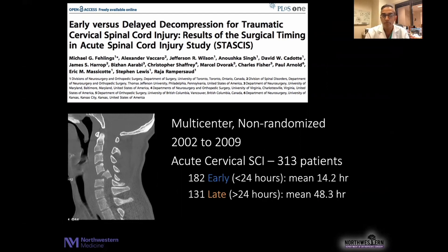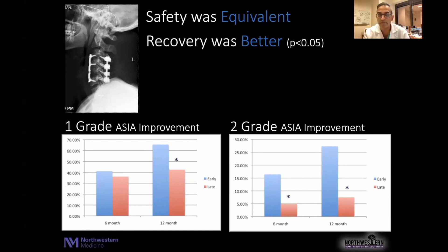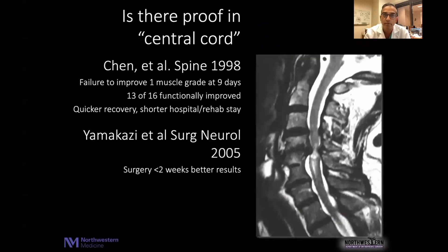As a refresh, the STASCIS study looked at acute cervical cord injuries treated either early or late with a 24-hour cutoff. Safety levels were equivalent in both groups, and neurological recovery was substantially better in those who had surgery early versus late. With the same mindset, we move towards this concept that in the setting of central cord injury, in patients who are not improving spontaneously neurologically, surgery seems to be the right answer for these individuals.